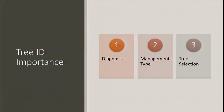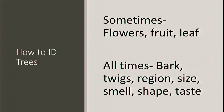So why is tree ID important? First off, if you have issues with your trees, diagnosis is a big part of that. Different pests and diseases target different species — for example, Shumard oak will not have oak wilt, but your live oak could. In terms of management type, Chinese pistache don't always have a central leader, while Shumard oaks tend to. And with tree selection, whether you want a tree for shade, fruit, ornamental fragrance, or blooms, it's important you know what species you're getting.